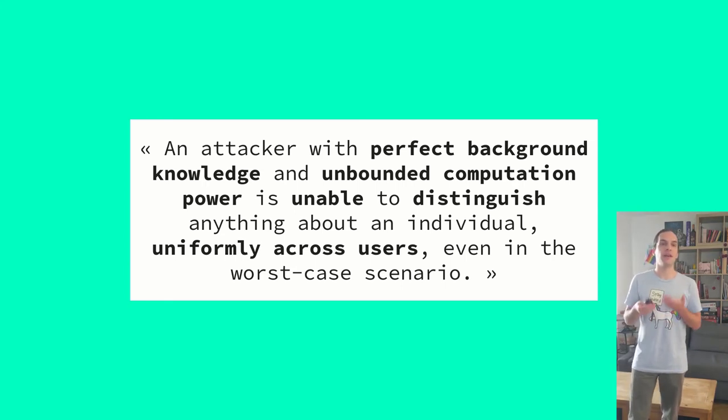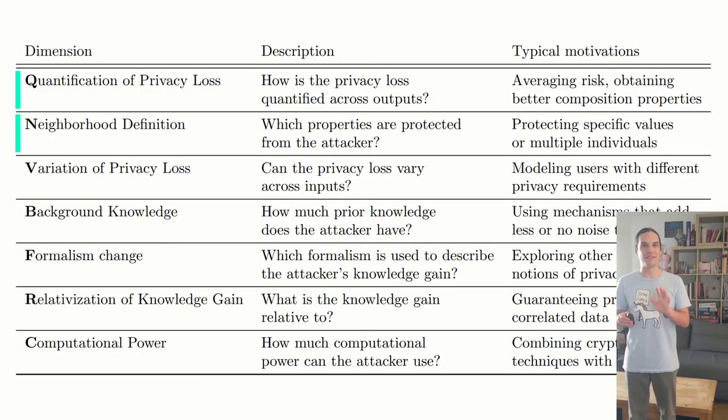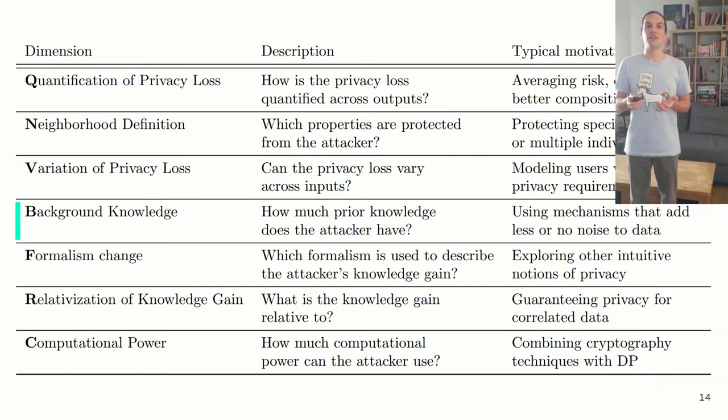What else can we change? We identified five other aspects. Some definitions give different privacy guarantees to different people in the database, saying that essentially more people get more privacy, lower epsilon, than others. So, the privacy loss is allowed to vary across inputs, typically to model users with different privacy requirements.